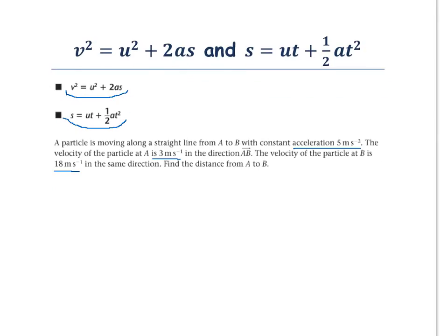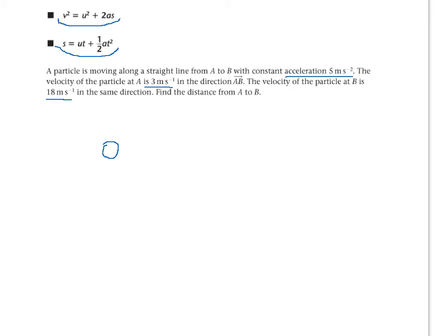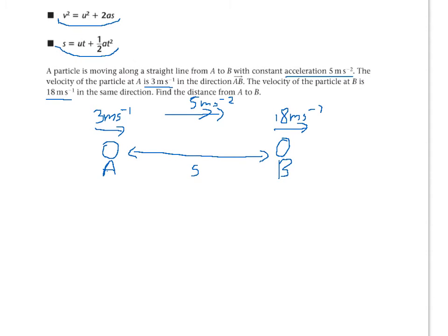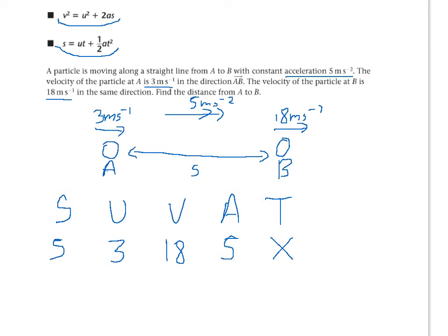We can use what we know to draw a diagram. At A, the velocity is 3 metres per second; at B, it is 18 metres per second; and the acceleration is 5 metres per second squared. We're asked to find the distance S, and we don't know time and aren't told it. So let's write down what we know in SUVAT: we have the distance S, the initial velocity U, the final velocity V, and the acceleration A. We don't know time and don't need it — so we need a SUVAT equation that doesn't involve T. Looking at V squared equals U squared plus 2AS — it has no T.